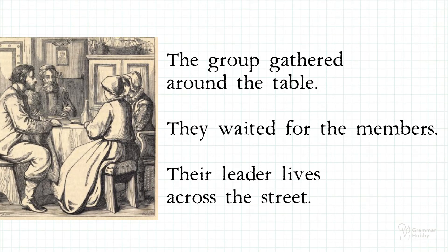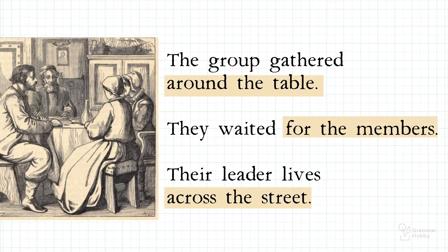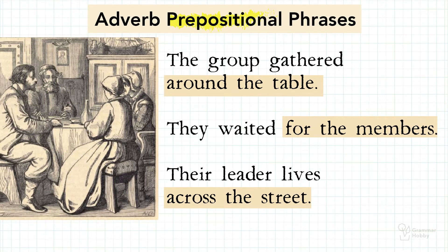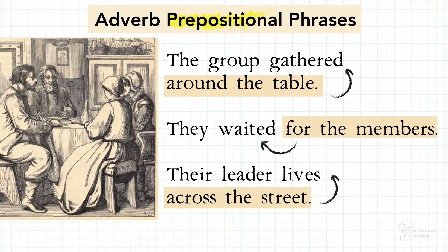Look at these examples. The group gathered around the table. They waited for the members. Their leader lives across the street. Here, 'around the table,' 'for the members,' and 'across the street' function as adverb prepositional phrases. They point to the verbs gathered, waited, and lives, to tell relations about them.